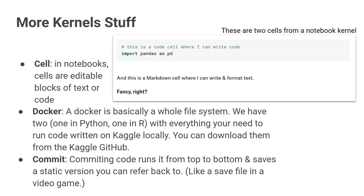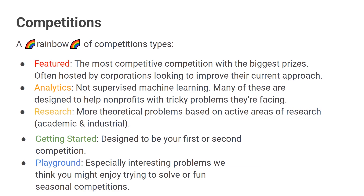And finally, committing. Committing is an idea from source or version control, and basically what it does is it runs all your code from top to bottom. It creates a nice finished HTML version that you can share with other people, so it sort of makes it look like a blog post. And you can refer back to the version that you've committed later on. I think about it as a save file in a video game — if you're about to do something risky, like change your code, and you want to be able to go back to where you were, you'd probably want to commit then.